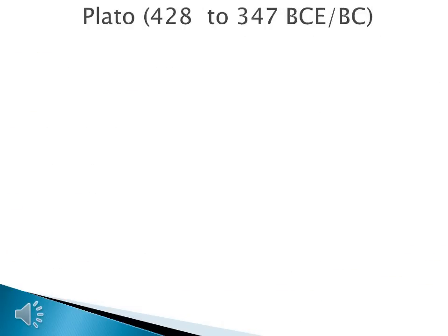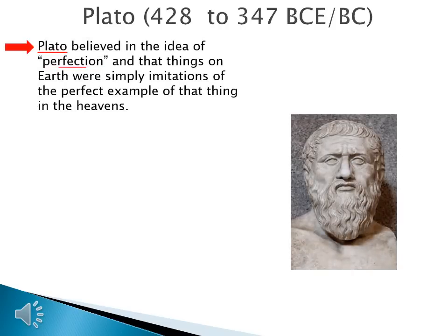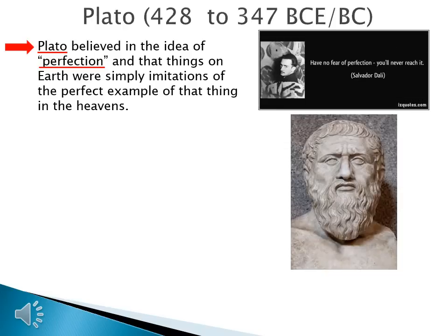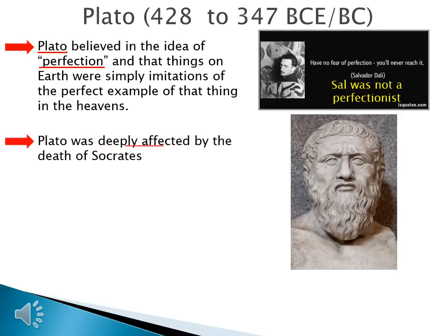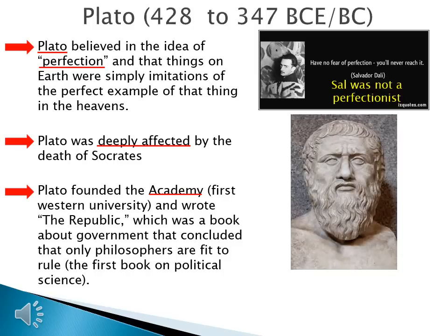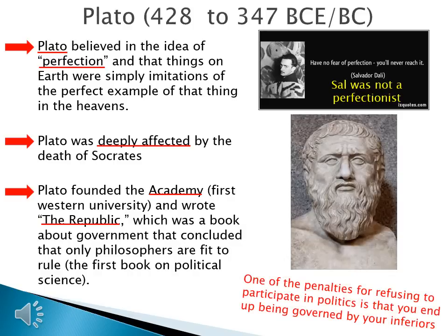Our next philosopher was a student of Socrates, so you can imagine he's a little upset about what happened to his teacher. Plato believed in the idea of perfection — that things on earth were simply imitations of the perfect example of that thing in the heavens. As Salvador Dali sums it up: have no fear of perfection, you'll never reach it. Nobody's perfect, nothing is perfect, and the only things that are perfect are in the heavens. Plato founded the Academy, the first Western university, and wrote a book called The Republic, about government, which concluded that only philosophers are fit to rule. This is the first book on political science.